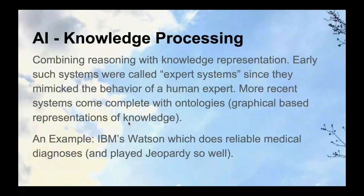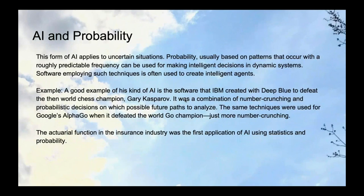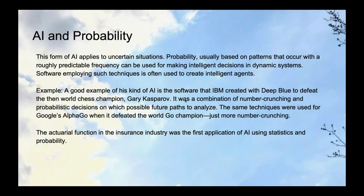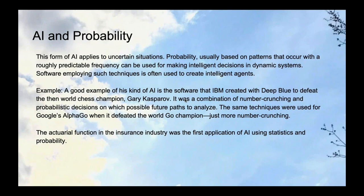IBM's Watson did very well on Jeopardy — it's also good for diagnoses and other use cases. There's probabilistic AI — another IBM story — with Gary Kasparov, the former chess champion. The AI engine could crunch so many numbers that it could literally go through all the potential permutations of moves by the opponent and figure out the best answer. It just computed every single permutation of possible moves by the human and won.